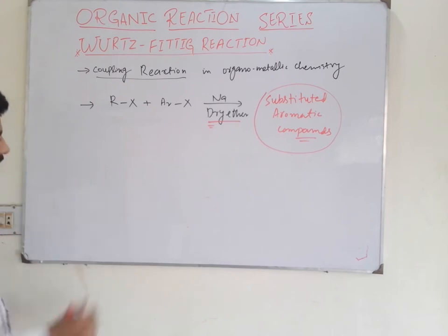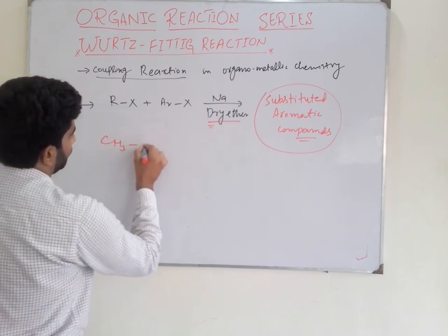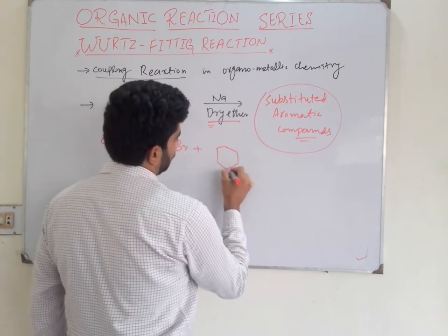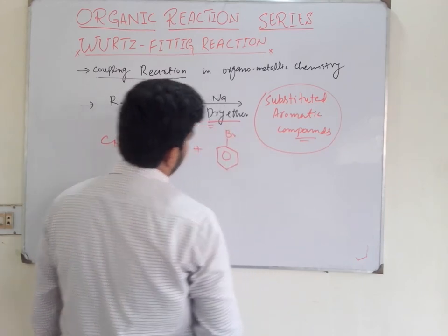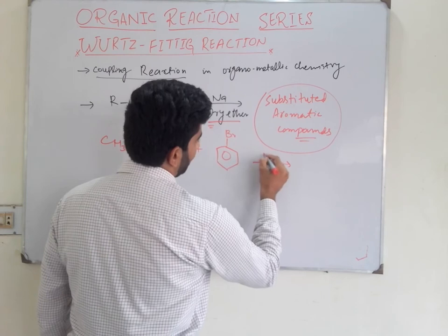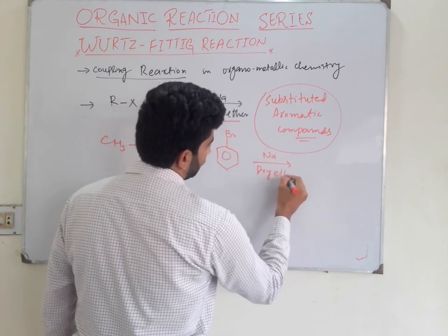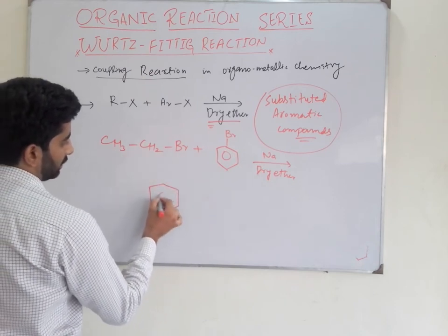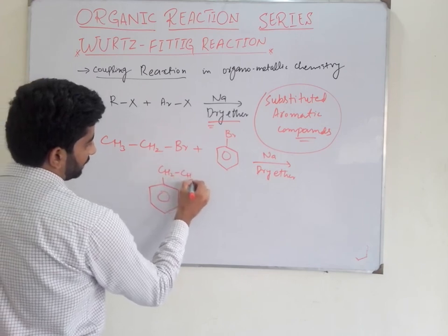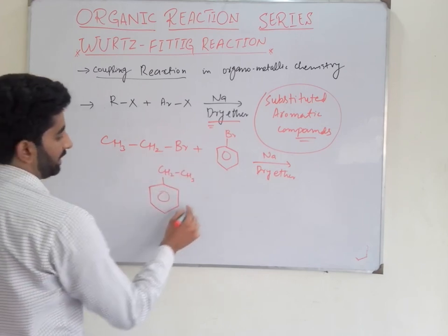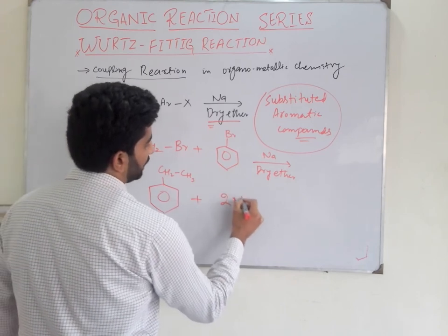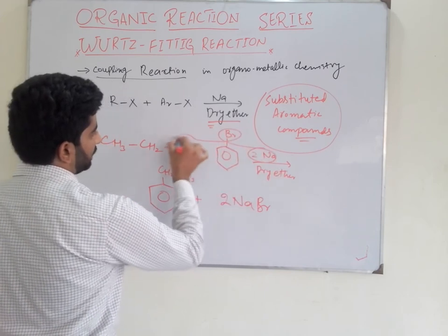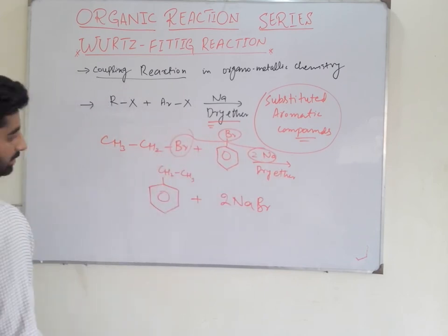Here is an example: we have ethyl bromide, which reacts with bromobenzene (aryl halide) in the presence of sodium and dry ether. There is a formation of ethylbenzene, which is a substituted aromatic compound. And secondly, there is also formation of sodium bromide.